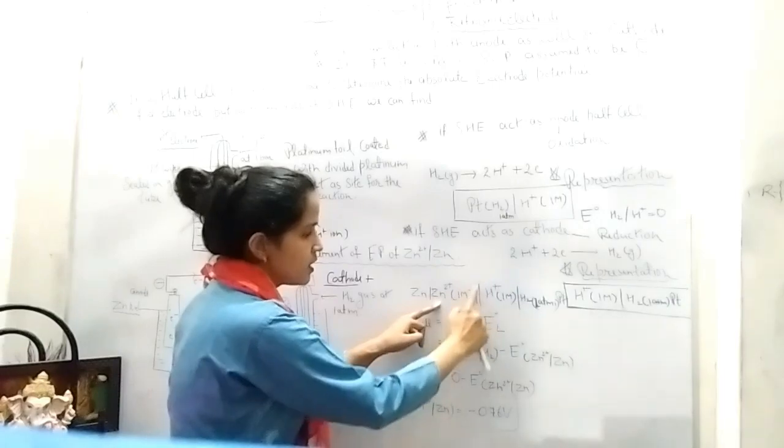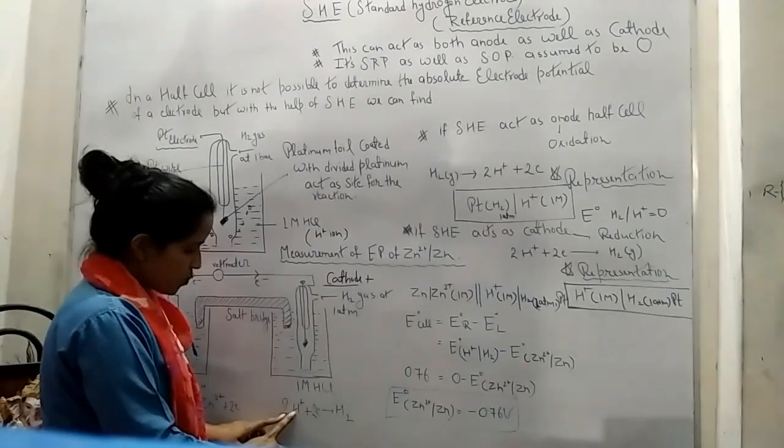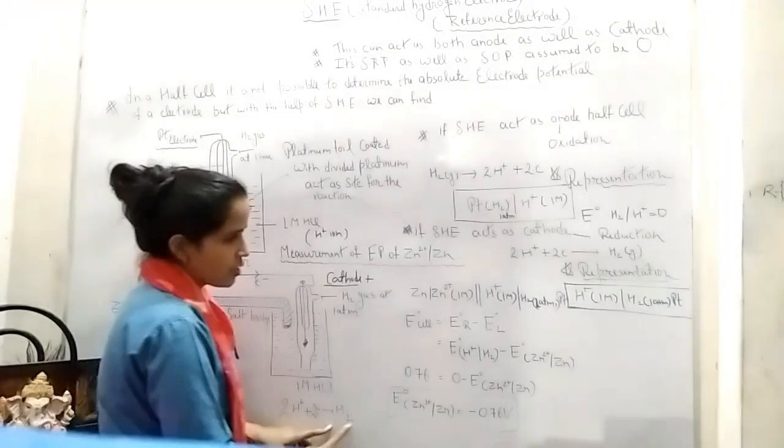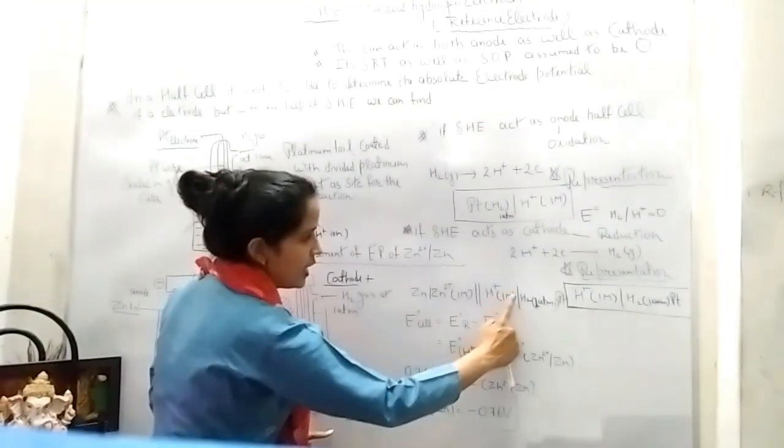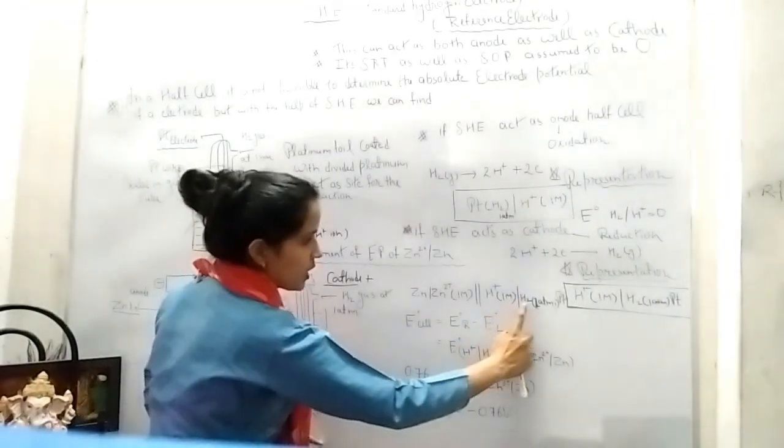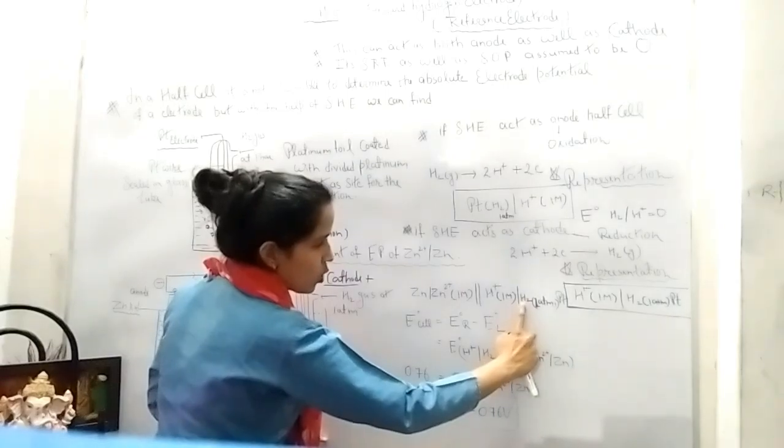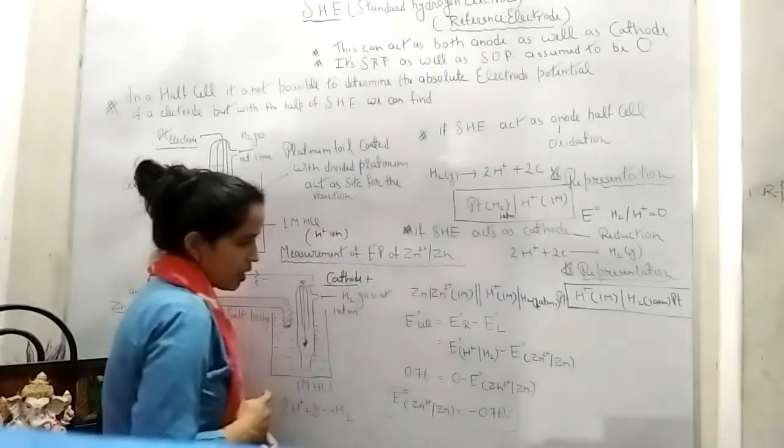Slash means this is salt bridge. And here see H+ takes two electrons to become H₂. H+ of one molarity takes two electrons to become H₂. And H₂ is on platinum.